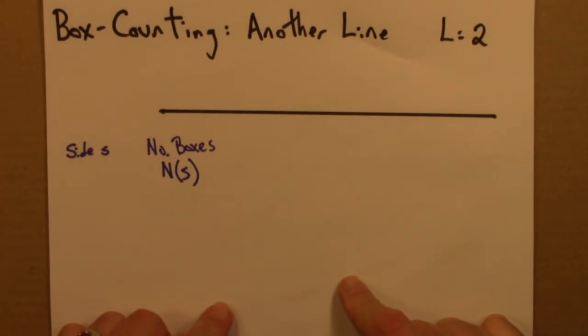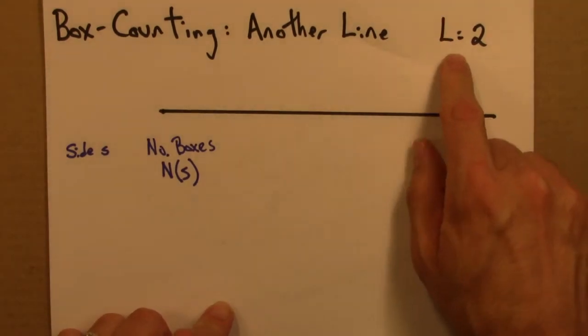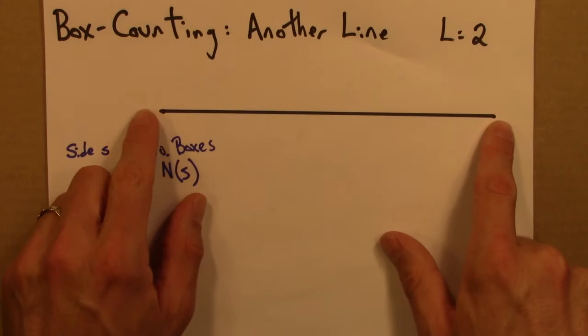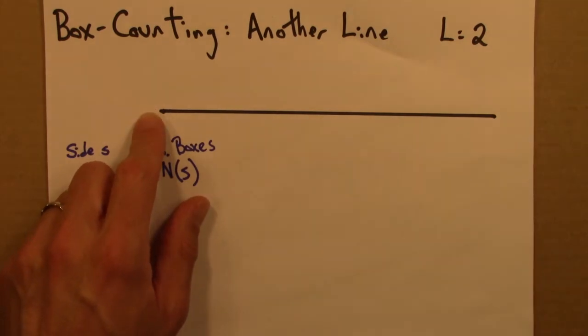So let's carry out box counting for another line, this time a line of length 2, and this was the shape that was in the last quiz.